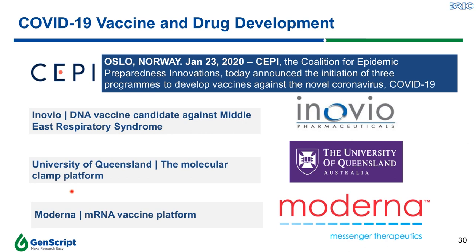The University of Queensland has been reported to have their first vaccine candidates available against the SARS-CoV-2 virus. Recently, a new partnership was formed with Moderna, who aims to deliver an mRNA-based vaccine against the SARS-CoV-2 virus.